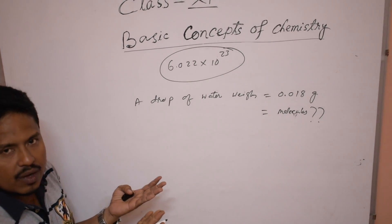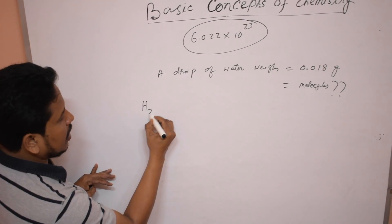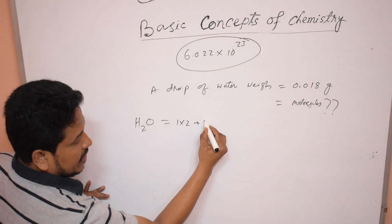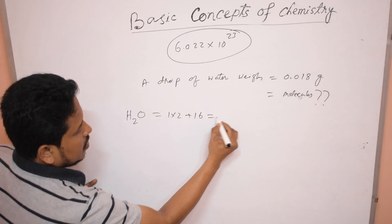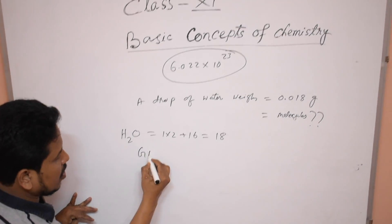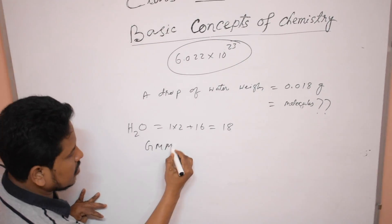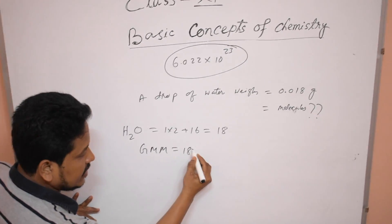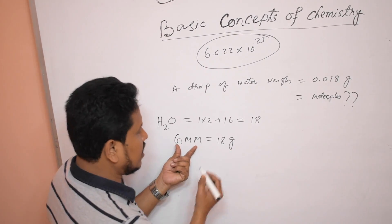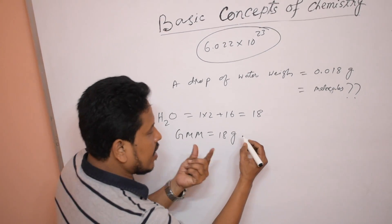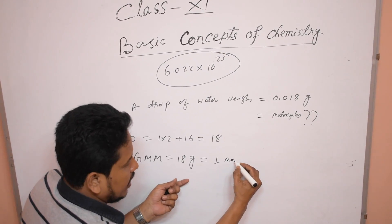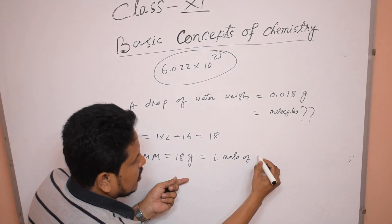How can we do the calculation? You know the molecular mass of water — already I have calculated — is 18. So gram molecular mass of water is 18 gram; just gram is added with the molecular mass. And 18 gram of water is already called 1 mole of water.